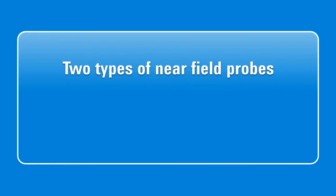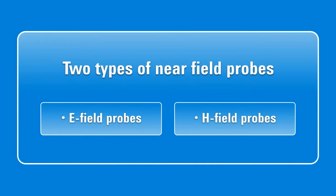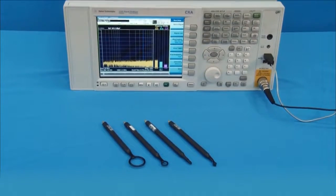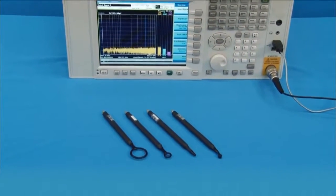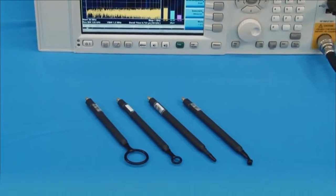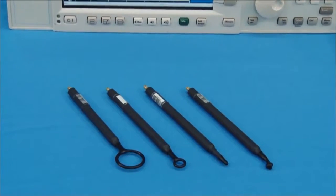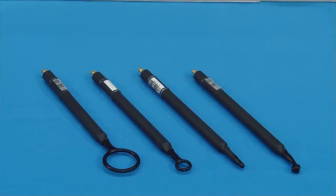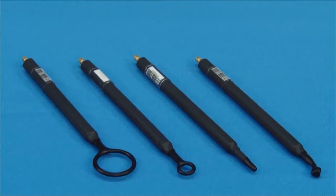There are two types of near-field probes. One is E-field probes which detect electric field. The other is H-field probes which detect magnetic field from emission sources. H-field probes are more commonly used to locate emission sources in near-field tests because the H-field fades faster than the E-field as distance increases. In other words, H-field probes provide better resolution.